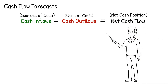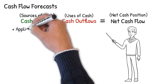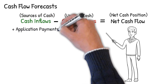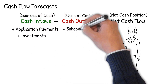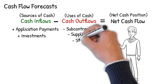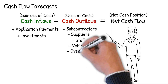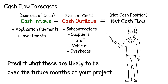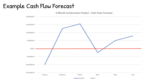After predicting your cash inflows — such as payments of applications and investments — and cash outflows — such as subcontractors, suppliers, staff, vehicles, and overheads — each month, and subtracting one from the other, you could be left with a cash flow forecast that looks something like this. As you can see, the cash flow enters a negative position in January and April, caused by more cash needing to be paid out than is predicted to be paid in.